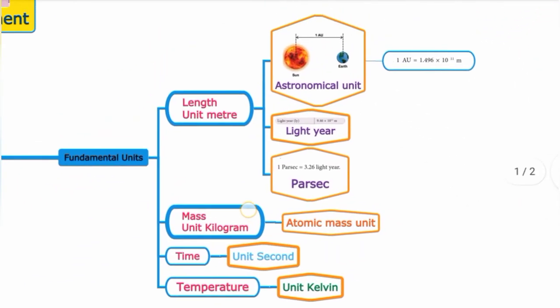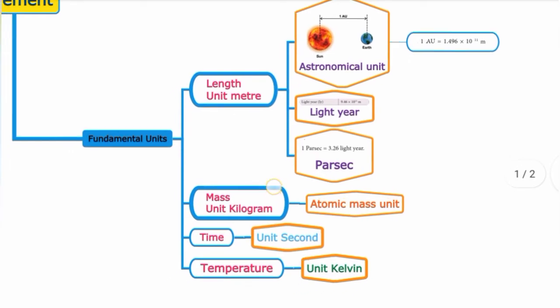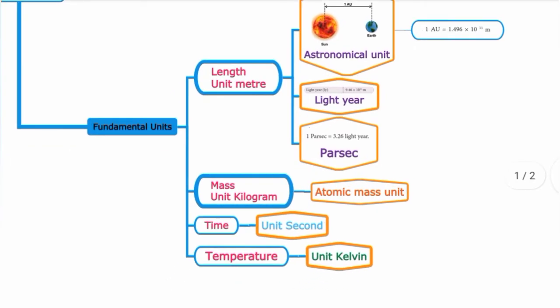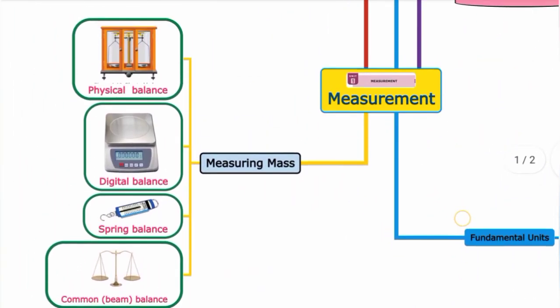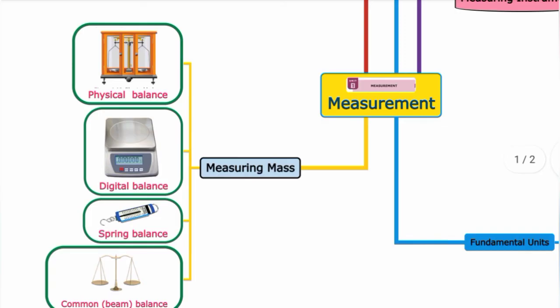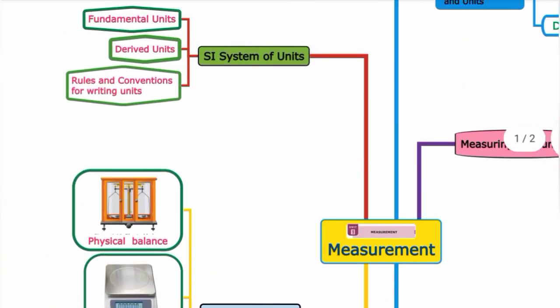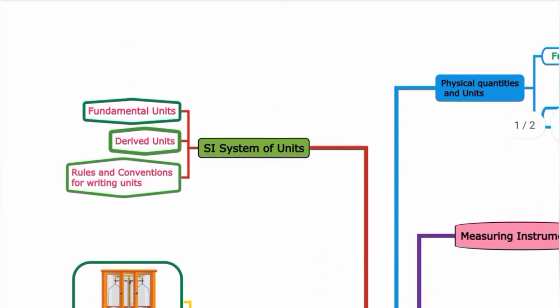Overall mind map summary: Measurement lesson covers physical quantities — fundamental quantities (cannot be expressed in other quantities; examples: length, mass, time, temperature) and derived quantities (expressed in terms of fundamental quantities; examples: area, volume, density). Measuring instruments: Vernier Caliper (0.1 mm accuracy) and Screw Gauge (0.01 mm accuracy). Units of length include Astronomical Unit, Light Year, and Parsec. Time unit is second, temperature unit is Kelvin. Measuring mass uses physical balance, digital balance, spring balance, and beam balance.